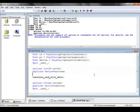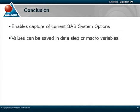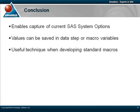To conclude, what we've hopefully seen here is that the GetOption function can be used to successfully capture the values of both SaaS system options and graphics options, and return those values to the data step and macro variables of our choice. This proves to be a particularly useful technique when we're developing standard macros and we wish to capture the current state of our SaaS session, such that when our processing has completed, we can return the user's SaaS session back to its original state.